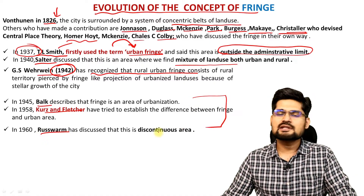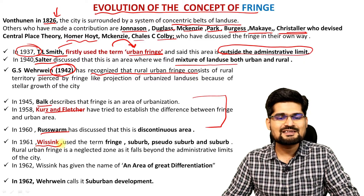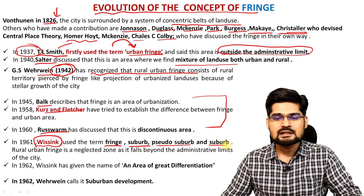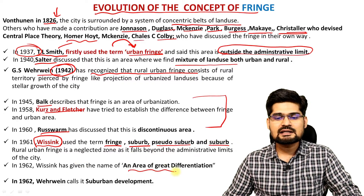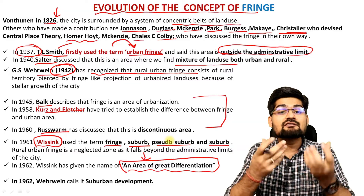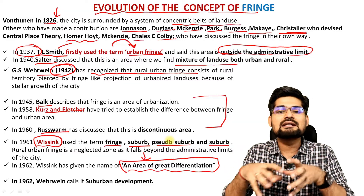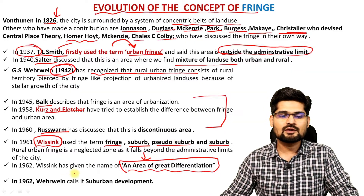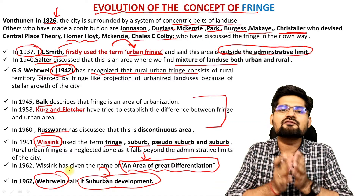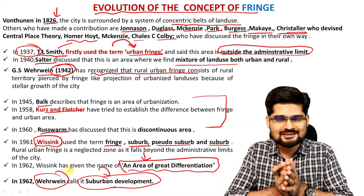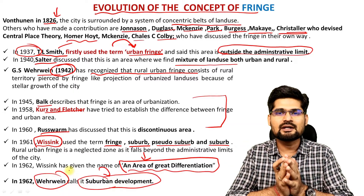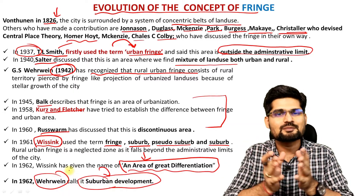Further scholars Balk, Curzon, Fletcher, and Ruswam all talked about the rural urban fringe in their own ways. The scholar Vysink gave more terms in the 1960s — fringe, suburbs, pseudo suburbs — and then talked about an 'area of great differentiation' in 1962, meaning diversity and changing land use prominently just outside the city. Then Verwin again talked about suburbia or sub-urban development, which was prominent after World War Two. Most cities were being restructured and sub-urban, near-urban, peri-urban, and outskirts development were common around world cities and big urban centers.